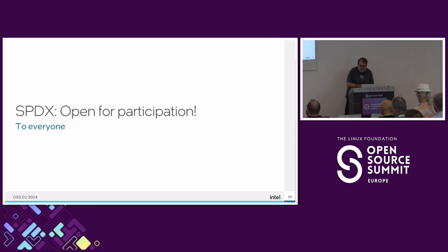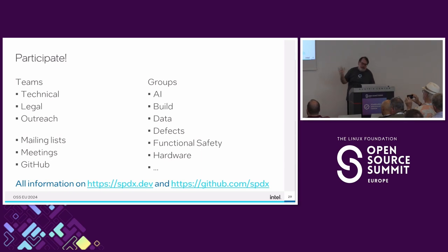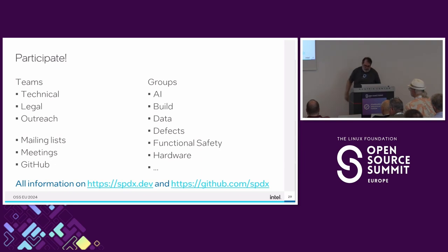The whole project is still very much alive and open to everyone. We have three main teams: technical, legal, and outreach. All work happens on the mailing list and GitHub, everything public. Different teams have different meetings, and we have special areas of interest — AI, build data, datasets, safety, hardware — where people meet, evolve their part of the specification, and bring it back to the general group.